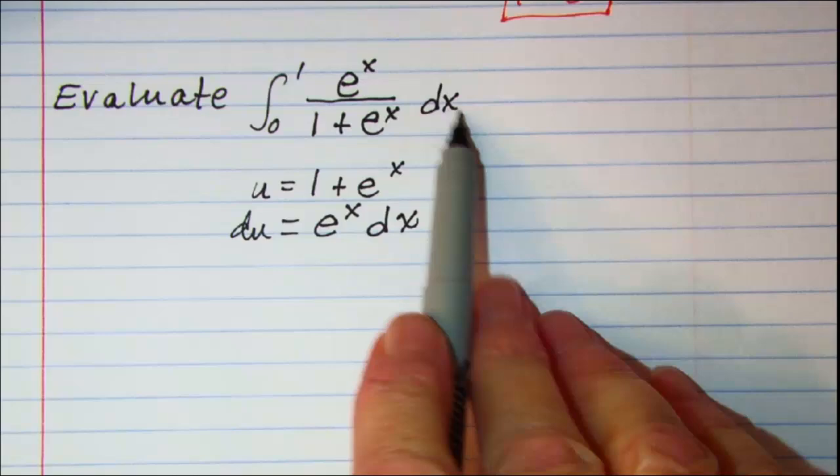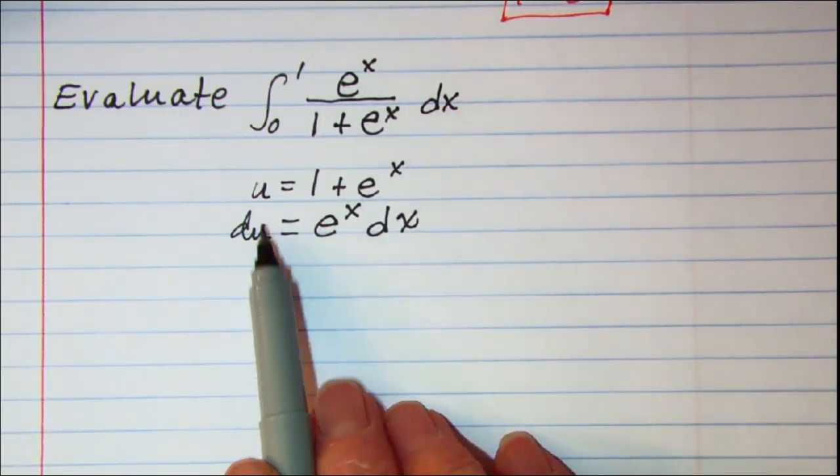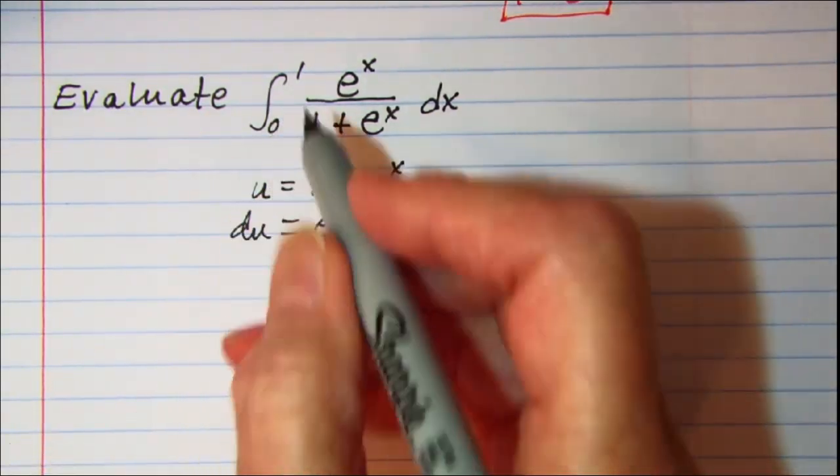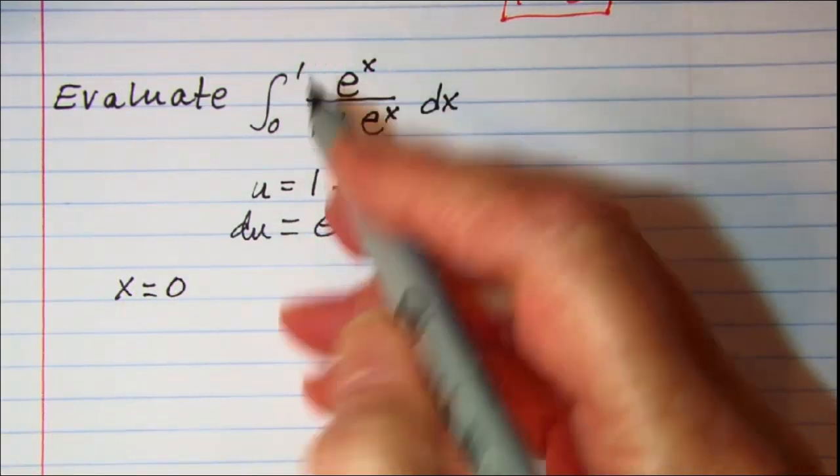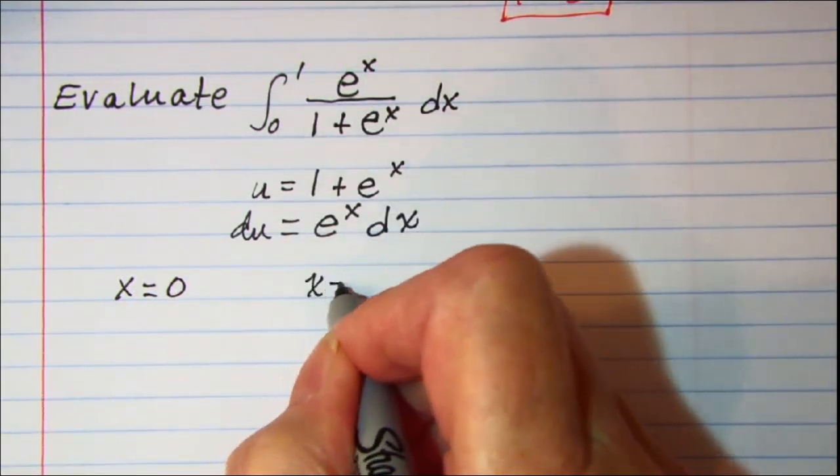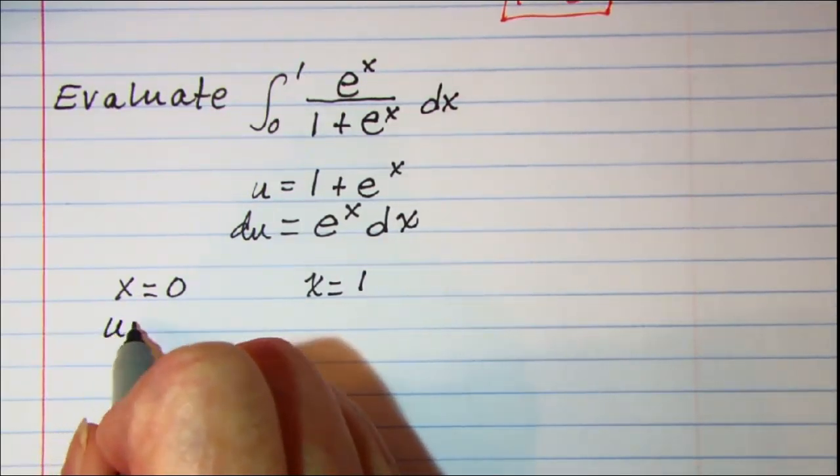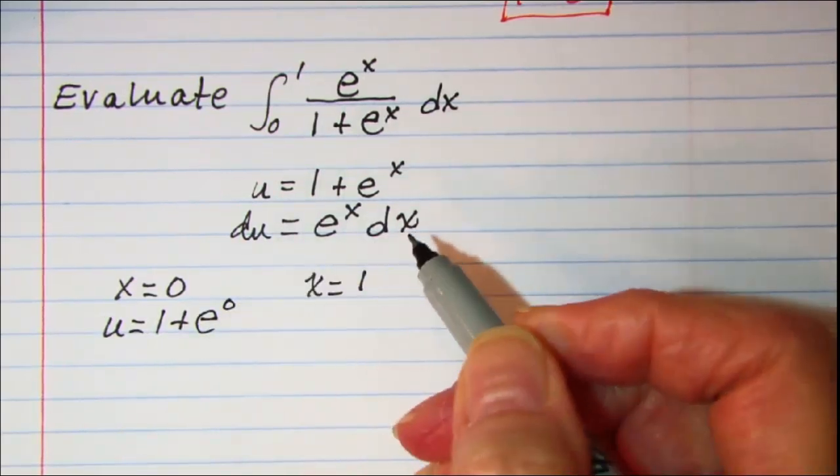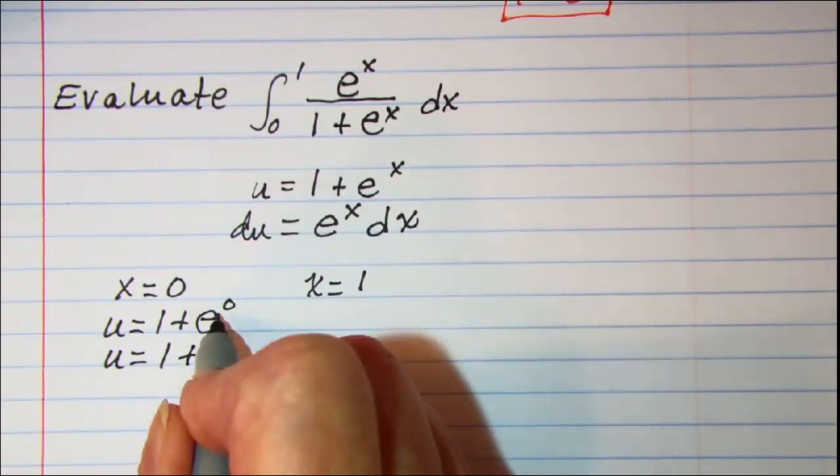These two factors can be replaced with just du. Then our lower limit, we have x equals 0 and x equals 1. So our new limits of integration will have u equal 1 plus e to the 0, so 1 plus 1, so u equals 2 will be my lower limit of integration.